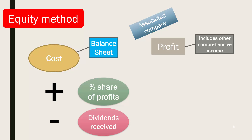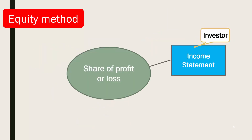Dividends received from the associated company reduce the carrying amount of the investment. And the investor's share of the investee's profit or loss is recognized in the investor's income statement.